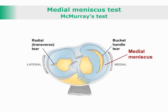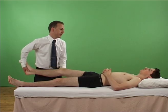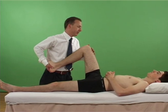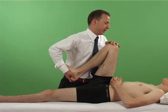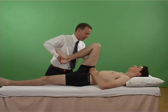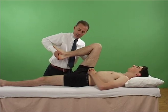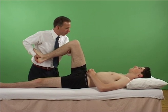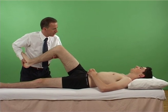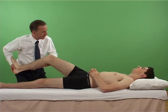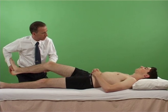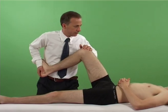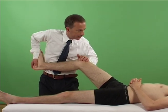McMurray's test: a test for dysfunction of the medial meniscus. The examiner flexes the patient's knee fully, then externally rotates the tibia on the femur and exerts a valgus force to the knee while it is slowly extended.